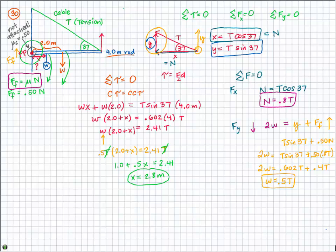To summarize: we used the sum of all torques equaling zero to get one equation, then the sum of all x-forces and y-forces equaling zero to get additional equations. Substituting one into another, we solved for the only unknown asked for: x equals 2.8 meters. This is Jen at YouReallyDoLoveScience.com.